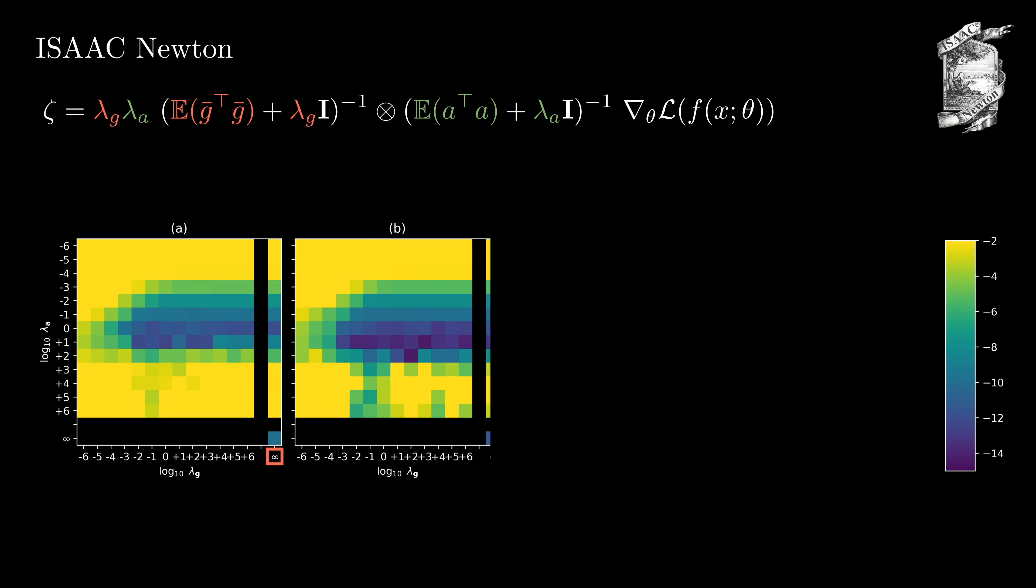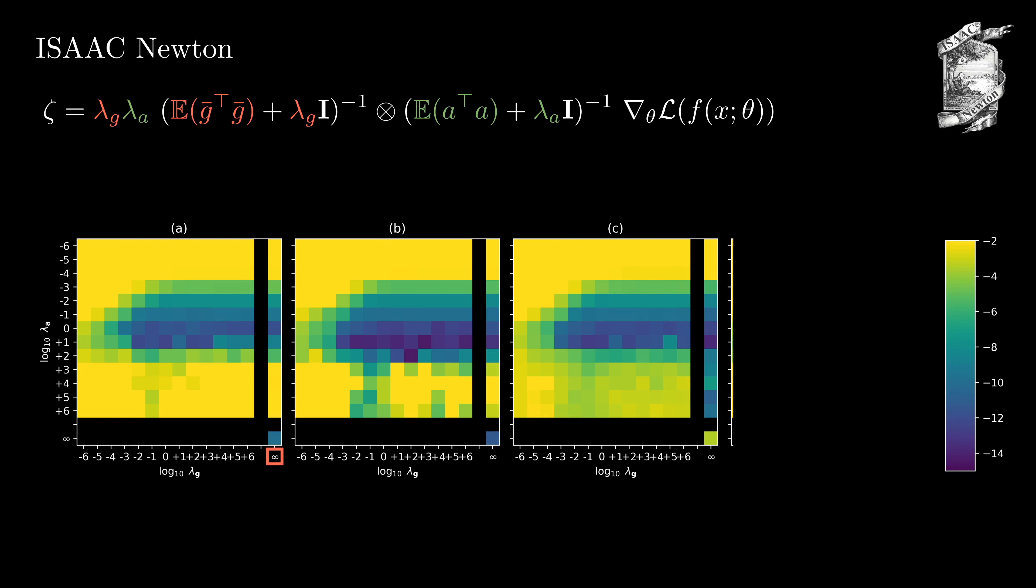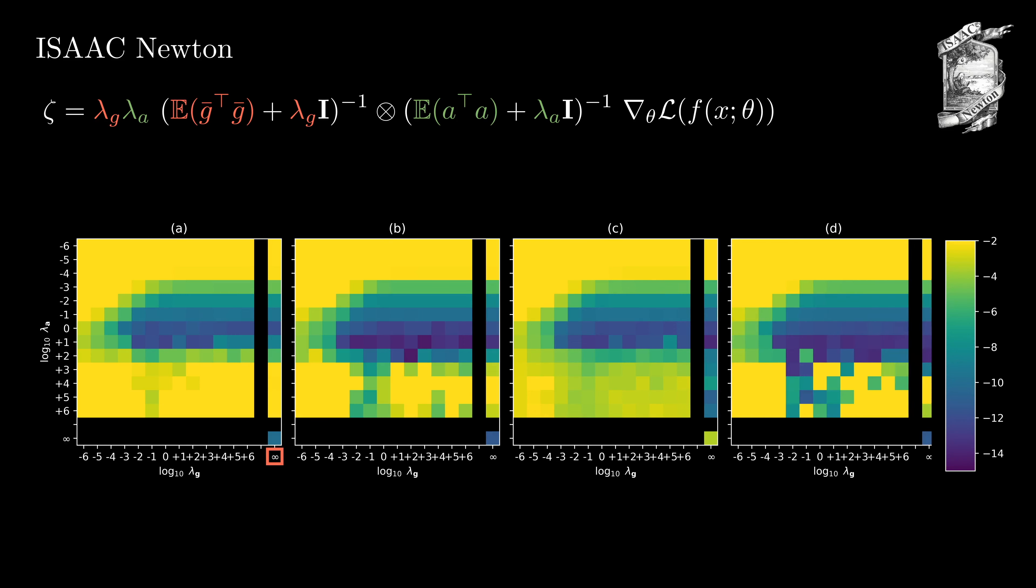Let's have a look at some other models. We can observe the same behavior for other settings. This observation was one of the primary motivations for our work. What this means is that it is reasonable to set lambda g to infinity as it allows for easier computation while maintaining performance.